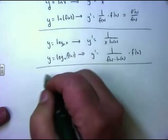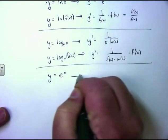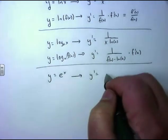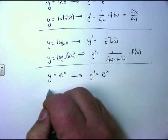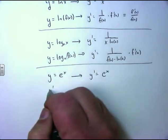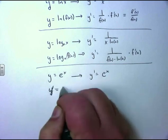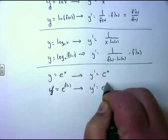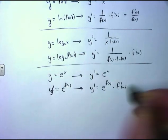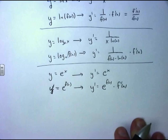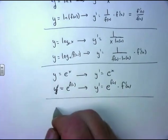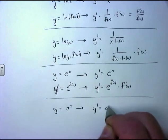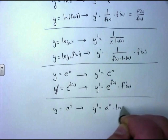For the exponentials: if y equals e to the x, remember e to the x is its own derivative, so the derivative of e to the x is e to the x. If we have y equals e to a function, the chain rule version gives us y′ equals e to the function times the derivative of the exponent. And two more rules: if y equals a to the x, the derivative is a to the x times the natural log of a.